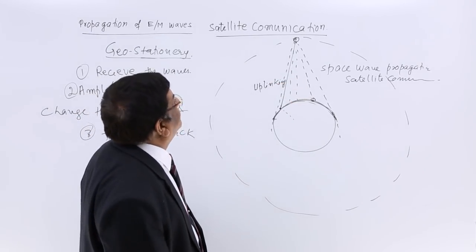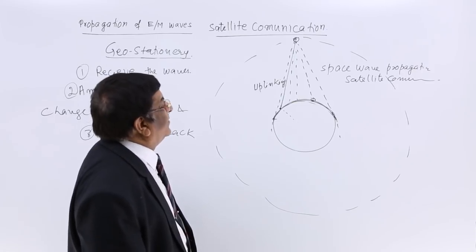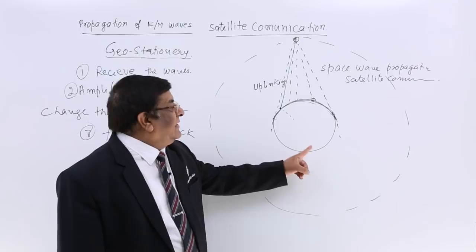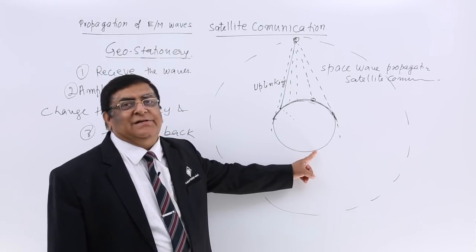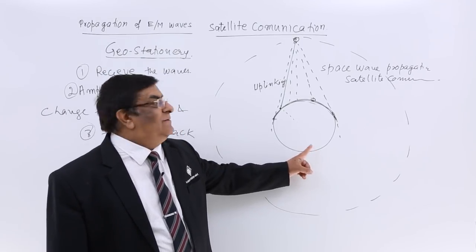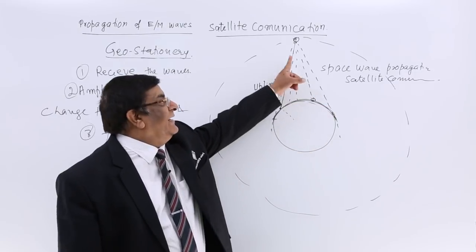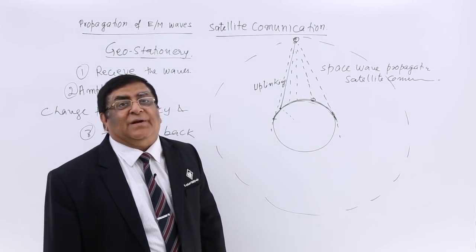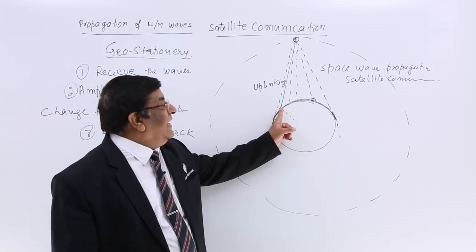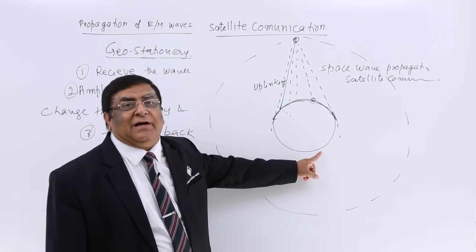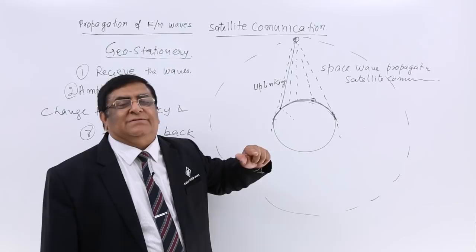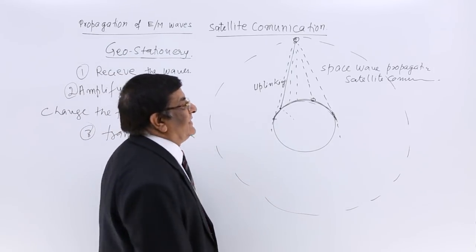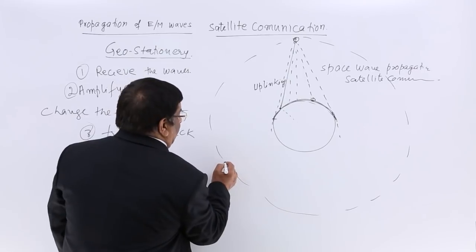Then, this satellite communication, if I send a signal from here, can I receive it here? Answer is no, I cannot. Because from this to this is the range only. Then, if there is a match in Brazil, in Argentina, here is India. Can't I see that? Answer, we have a solution for that. And that solution is the global communication.